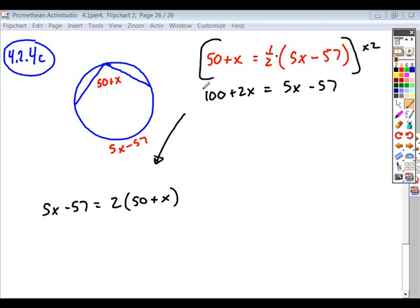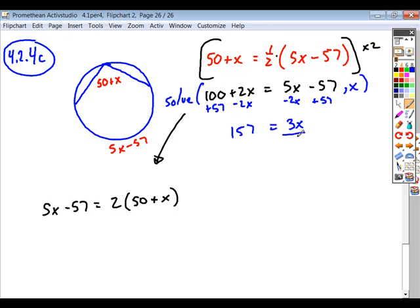And then just solve through. You can either use your calculator to solve for x, or if you work through by hand, subtract the 2x from both sides. It leaves you 3x. Add 57 to both sides. That gives you 157. Divide by 3. And so that winds up being your solution for x in that case.